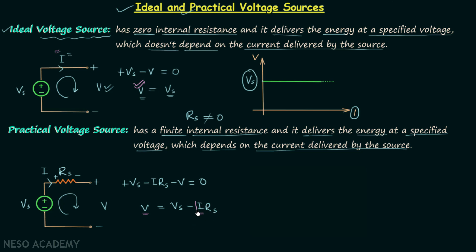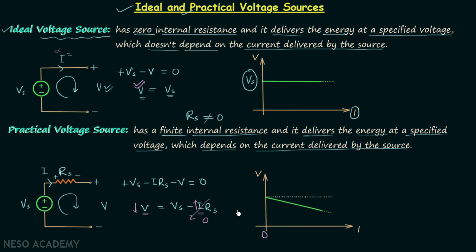When we increase the current I, I·Rs also increases, and hence V decreases because I·Rs is subtracted from Vs. Plotting the variation of V with change in I, we can see that on increasing I, V decreases. When I equals zero, I·Rs is zero and V equals Vs — so this voltage is equal to Vs. The dashed line shows the ideal behavior, but in the practical case Rs is not zero, and due to this internal resistance the terminal voltage decreases as I increases.